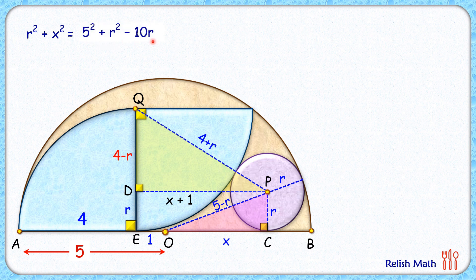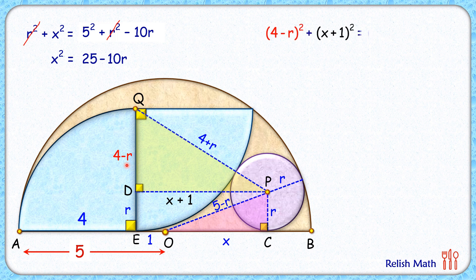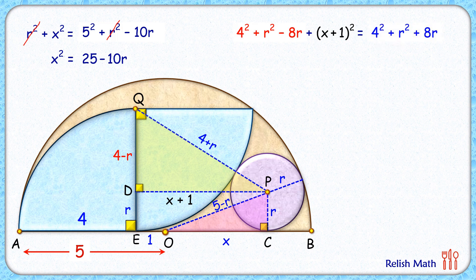From the pink triangle, r² plus x² equals (5 minus r)². Opening the bracket gives 5² plus r² minus 10r. Both r² terms cancel, giving our first relation: x² equals 25 minus 10r. Now forming the equation from the second triangle, applying (a minus b)² and (a plus b)² on both sides, both 4² and r² cancel, giving our second relation: (x plus 1)² equals 16r.